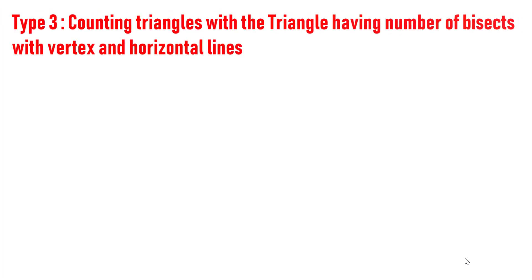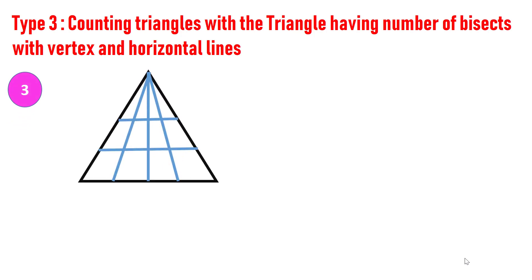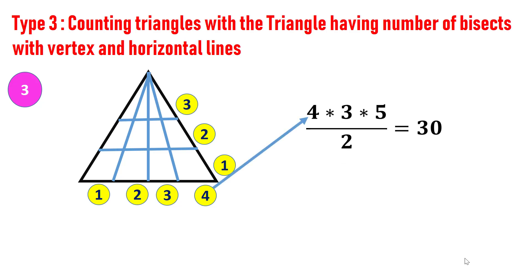Let's apply the trick to a more complex figure. Here, number of horizontal parts is four and number of vertical parts is three. Multiply along with one more than the horizontal parts: four into three into five, which yields 60. Divide by two, which yields 30. So there are 30 triangles in this figure.